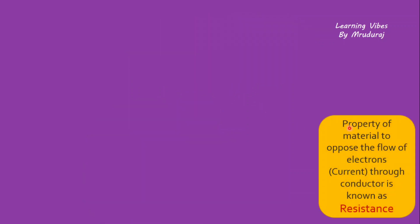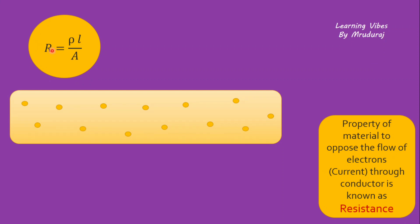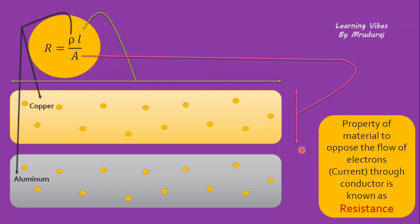First, very quickly, let's go through resistance. If you want to understand this in detail, I am providing a link above so you can go through that link and understand resistance better. The property of a material to oppose the flow of electrons through a conductor is known as resistance. The equation is R = ρL/A, where ρ represents the resistivity of the material, which is different for different materials, L represents the length of the conductor, and A represents the cross-sectional area of the conductor. If you want more detail, I am providing a card link above this video.